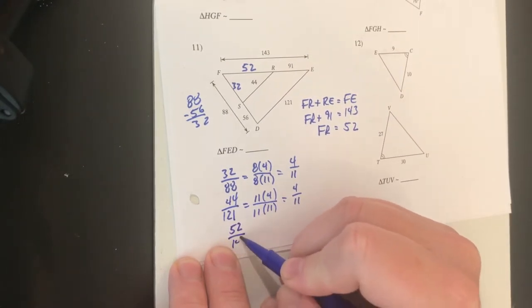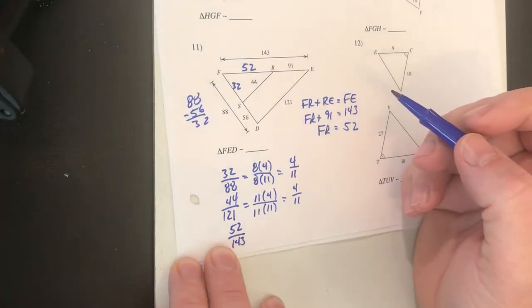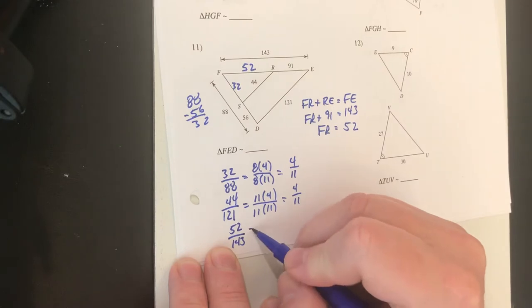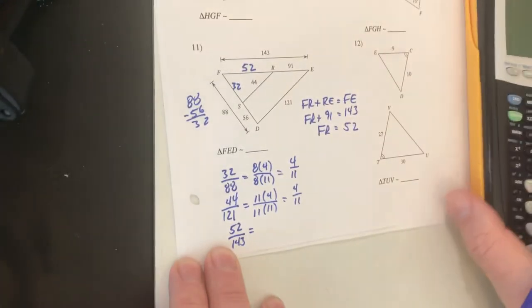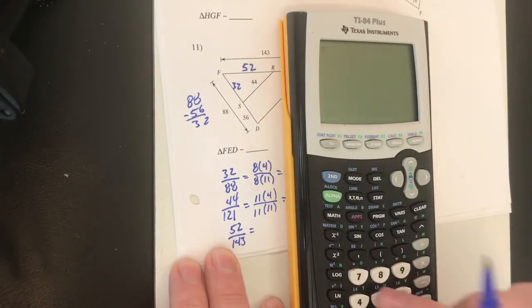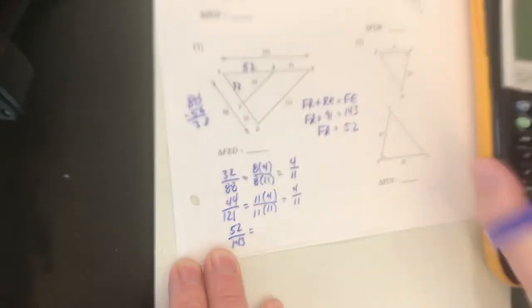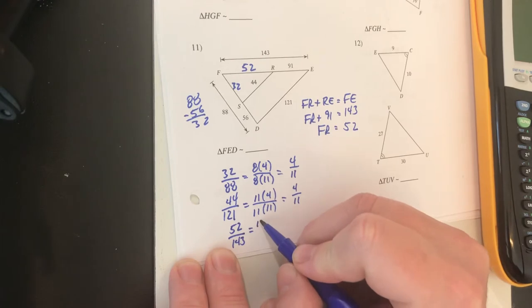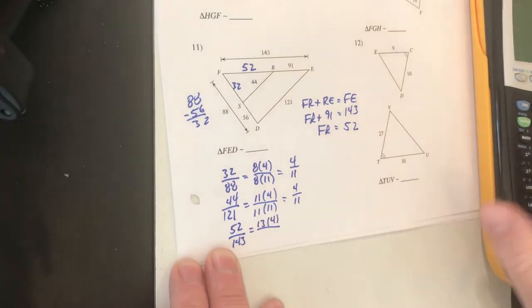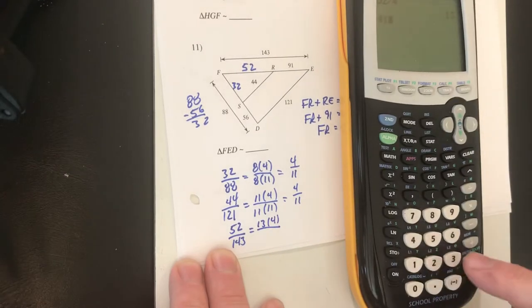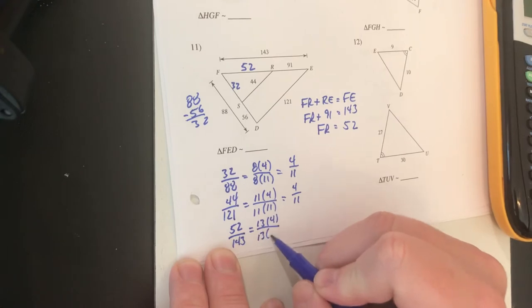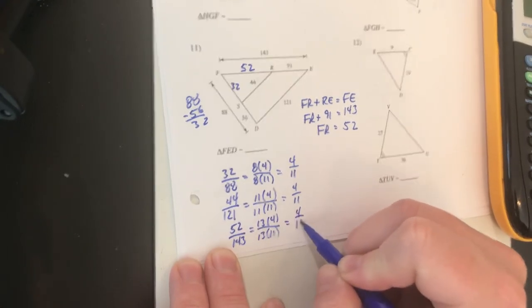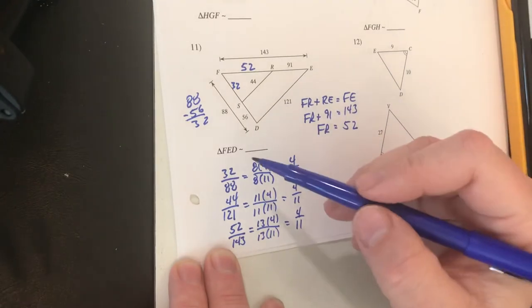So those two sides reduced to 4 over 11 so now we need to try the two long sides 52 over 143. 52 divided by 4 is 13 so hopefully I can factor out a 13. 13 times 4 gives me 52 and if I divide 143 by 13 sure enough I get 11 so if I factor out a 13 from both of those I get 4 out of 11.